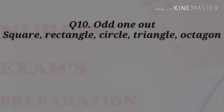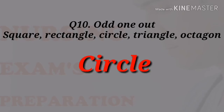Next question is: Find out the odd one — Square, rectangle, circle, triangle, octagon. Circle is the right answer.